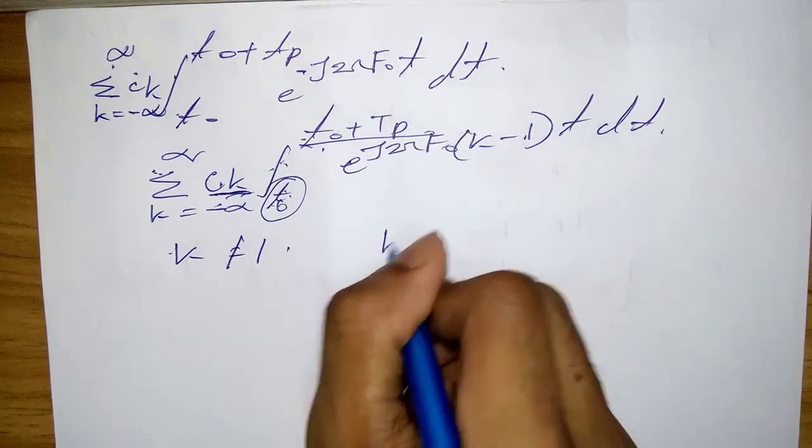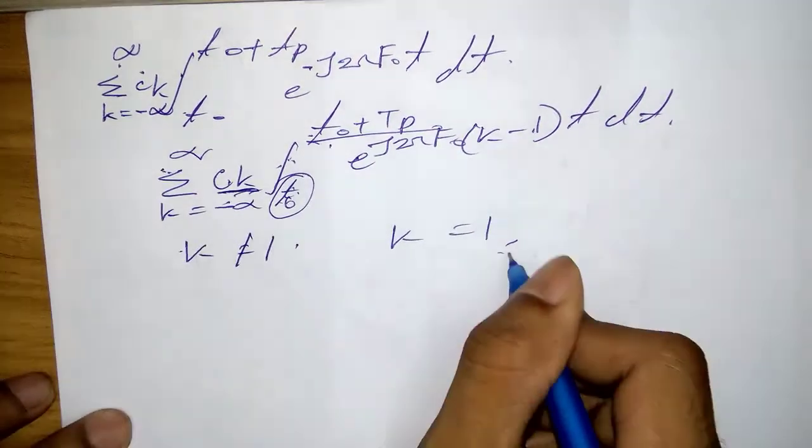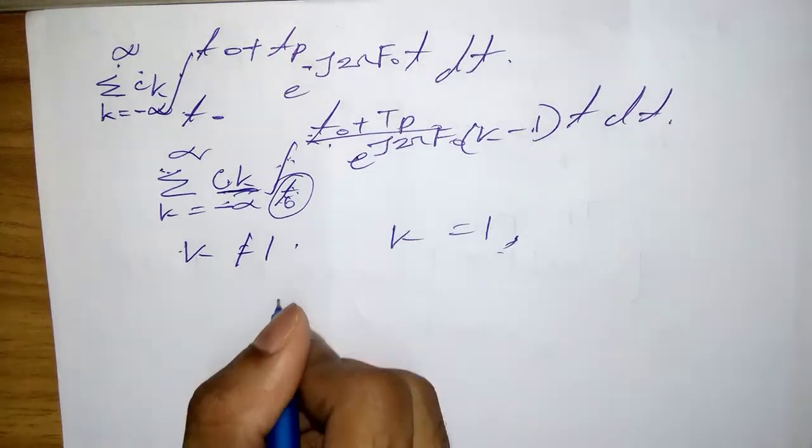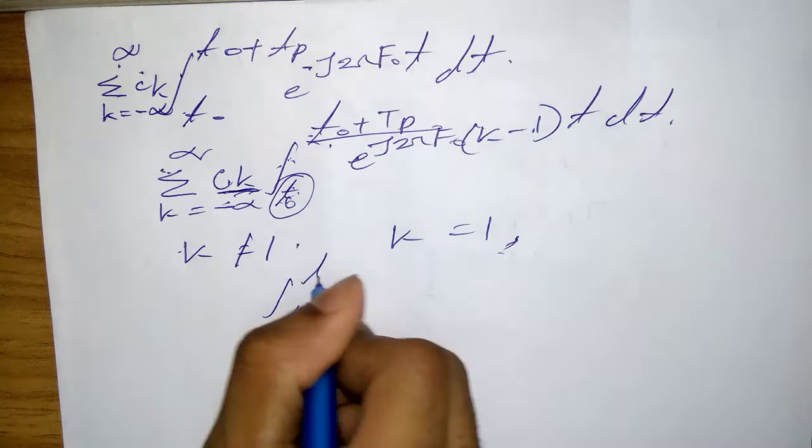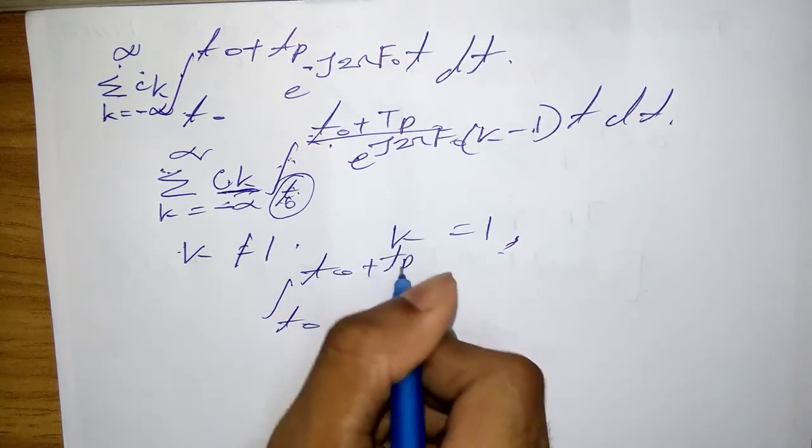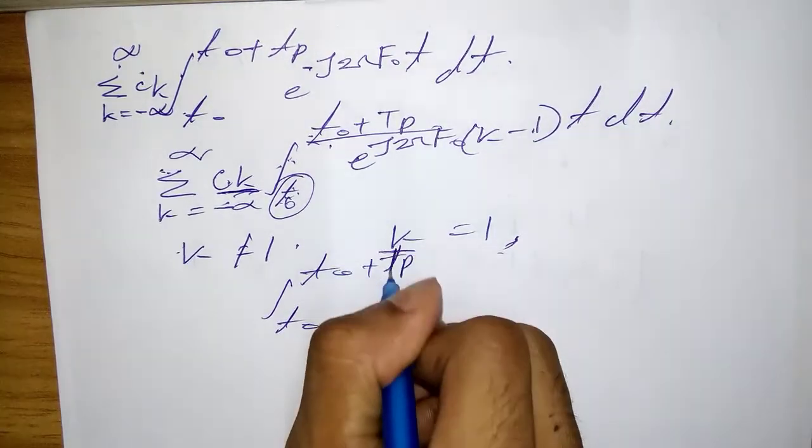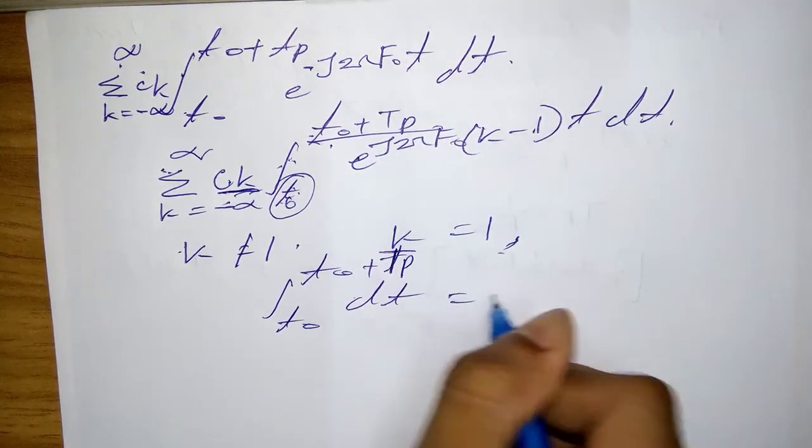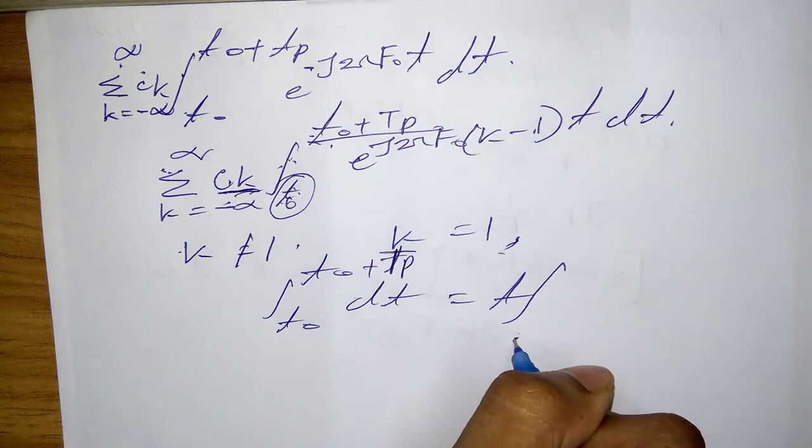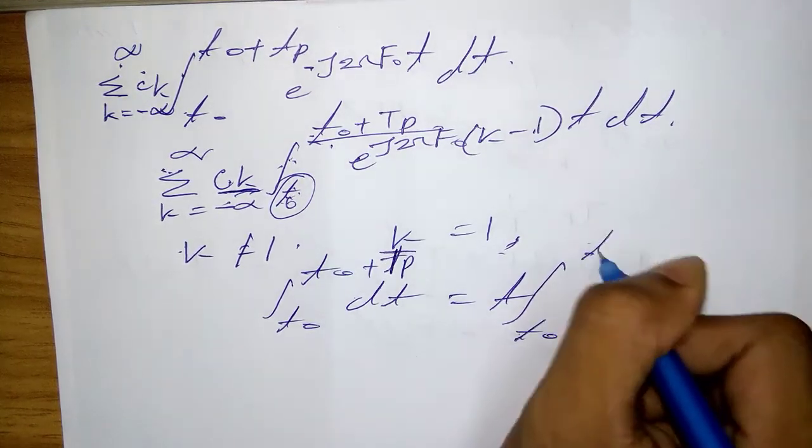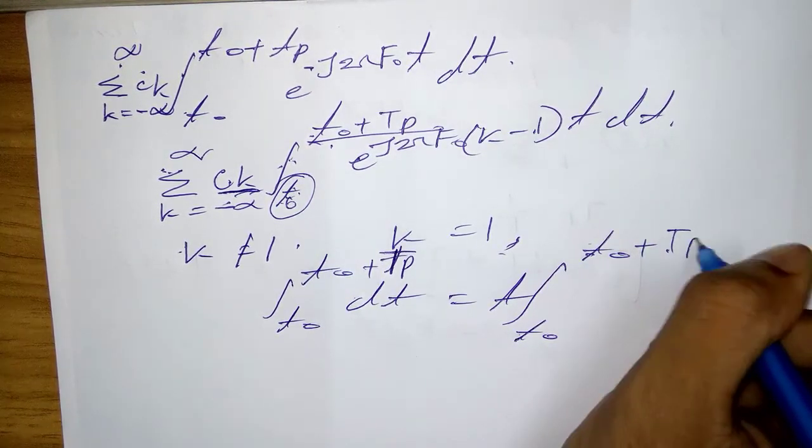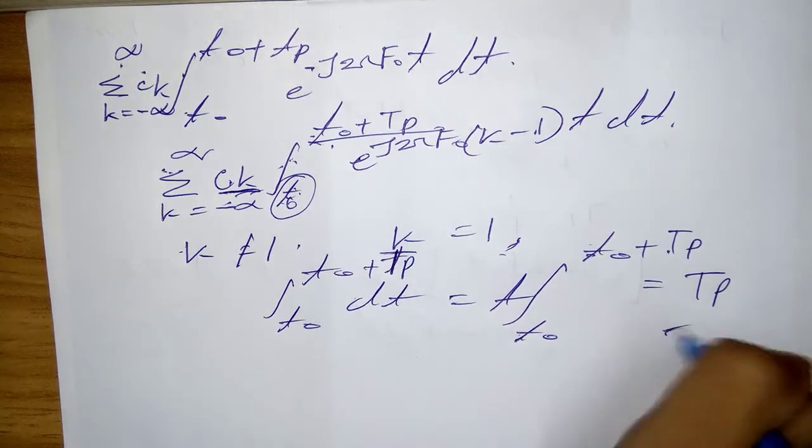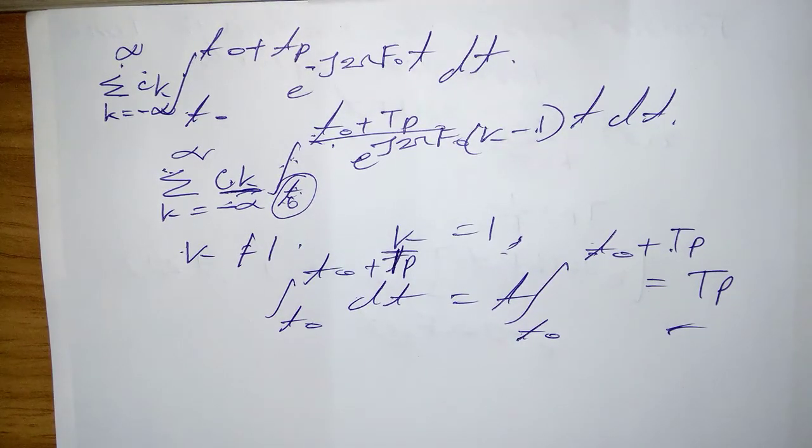On the other hand, if k = l, we have the integral from t₀ to t₀+T_p, which equals T_p. This is the Fourier exponential form. Therefore, the expression...